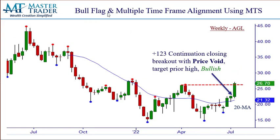So we had our bull flag on the daily, and this is the concept of multiple timeframe alignment that makes up the Master Trader approach. One of the components is going up to a bigger timeframe. It doesn't have to be the same pattern — in fact it rarely will be — but our bias on the bigger timeframe has to be in alignment with the timeframe that you're trading. The daily was bullish with the bull flag we just talked about.